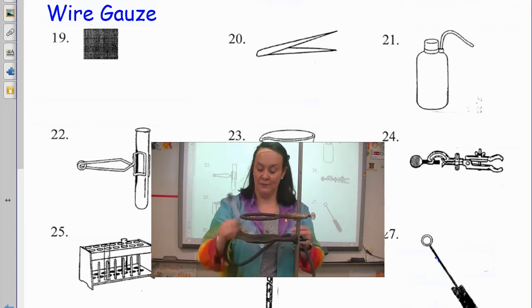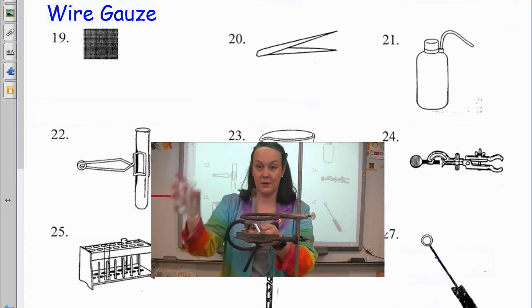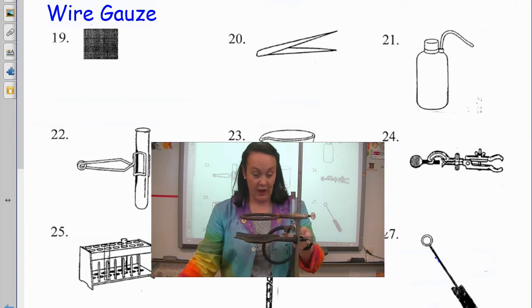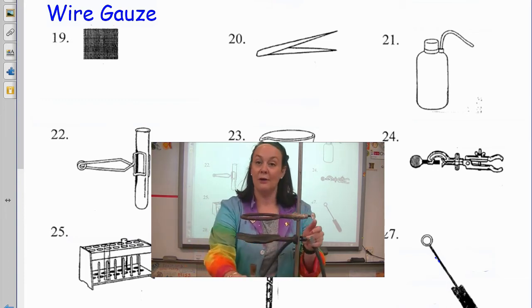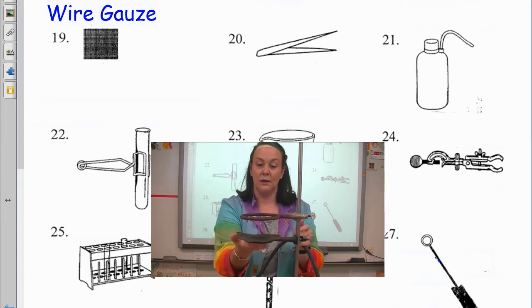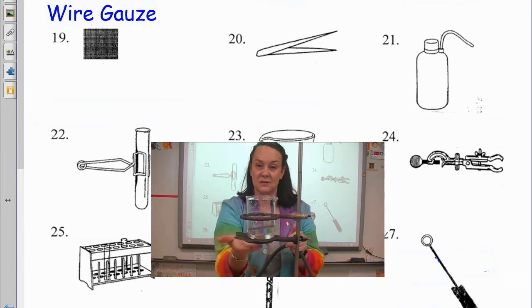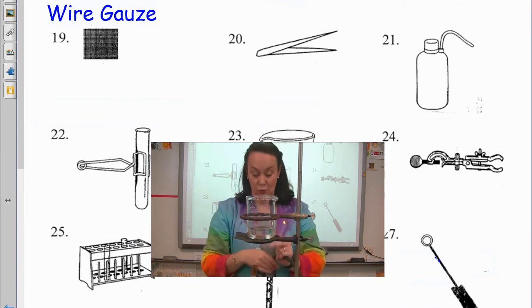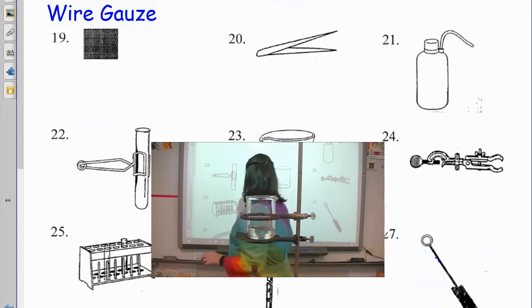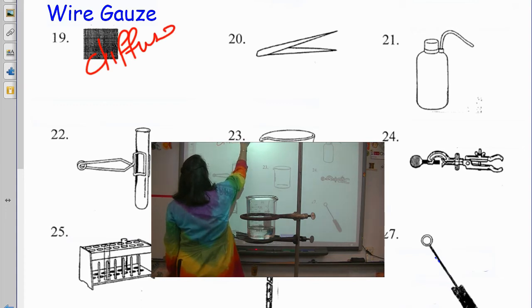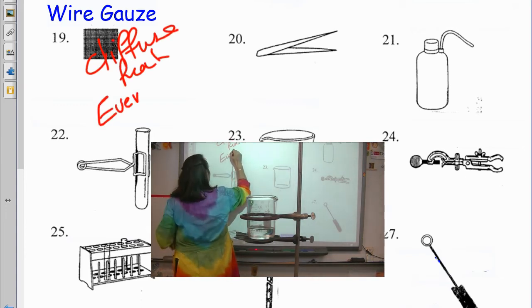So, when the Bunsen burner, if we were to just take a Bunsen burner and put a beaker directly over it without any metal, the heat would be very concentrated right on the bottom of the glass. If you put a piece of metal between the Bunsen burner and the glass, it can diffuse the heat and make for a much more even heating surface. So, I would say the wire gauze diffuses heat for even heating.